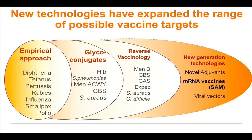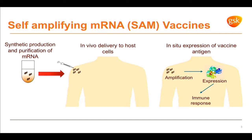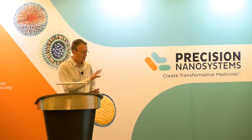We have a particular approach to RNA which differs from some of the others — the terminology we've used is self-amplifying mRNA, abbreviated SAM. The concept involves synthetic production of RNA, but the RNA we build is able to amplify. You inject the SAM, it amplifies in the cell in which it's taken up, and you get multiple copies of RNA, enabling much more production of high levels of antigen very quickly.